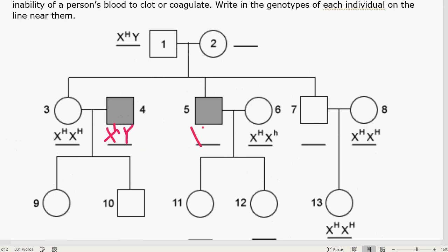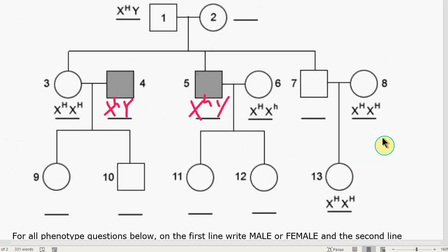Number five is also going to be X lowercase h, Y, because males are X, Y, and in order to have the trait, you have to have that lowercase x. Now nowhere else on here are there any indicated males that are shaded in.